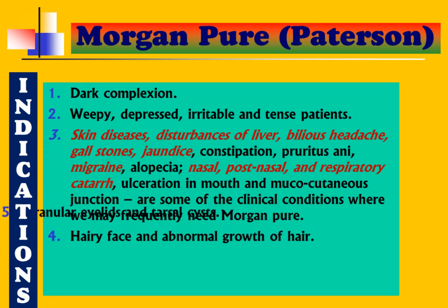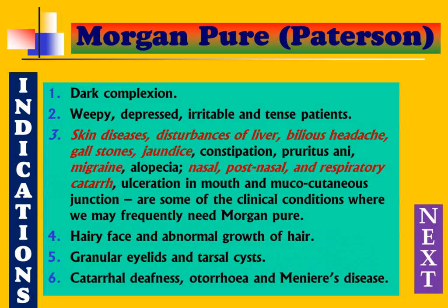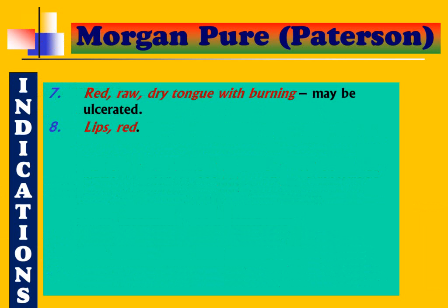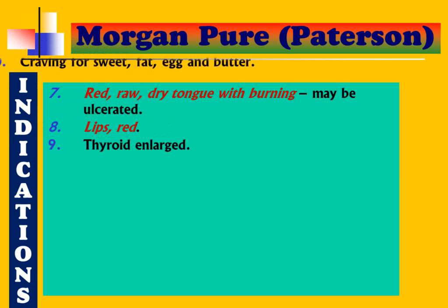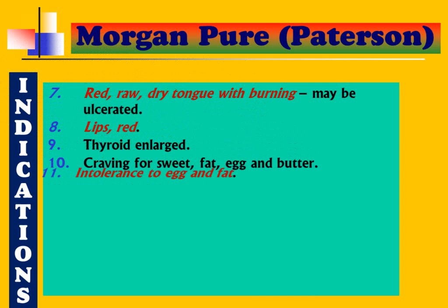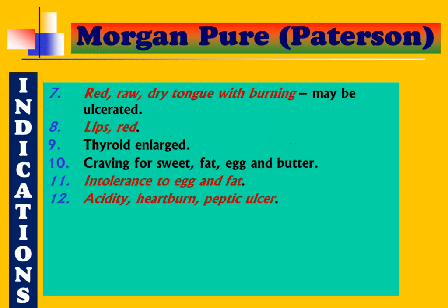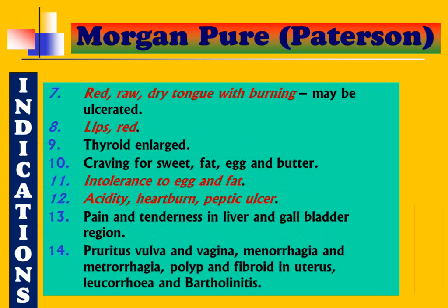Additional symptoms of Morgan Pure Patterson: hairy face and abnormal growth of hair, granular eyelids and tarsal cysts, catarrhal deafness, otorrhoea, and Meniere's disease (tinnitus, deafness, and vertigo). Raw, red, dry tongue with burning, possibly ulcerated. Lips are red like Sulphur. Thyroid enlarged — goiter. Craving for sweets, fat, eggs, and butter, but intolerance to egg and fat — craving yet aggravation, like Argentum nitricum craving sweets but aggravated by sweets. Acidity, heartburn, peptic ulcer, and pain and tenderness in liver and gallbladder region.